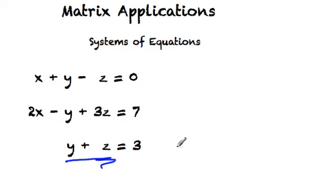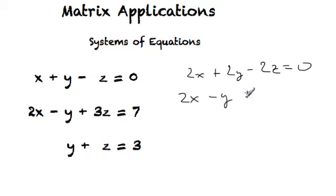I'm going to use the elimination technique. I already have one equation which has two variables only. Perhaps in these first two equations, I can try and get rid of x. So maybe I'll take the first one and multiply it by two. That's going to give me 2x plus 2y minus 2z equals zero. And then from this equation, we know that 2x minus y plus 3z equals seven.